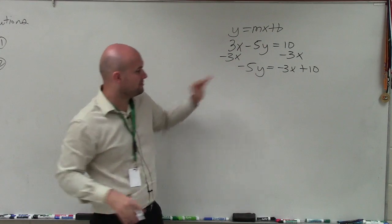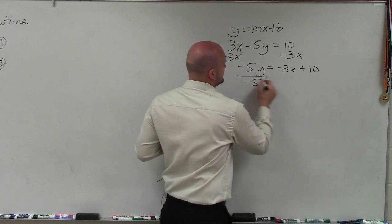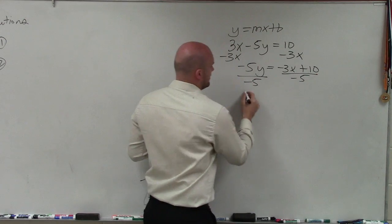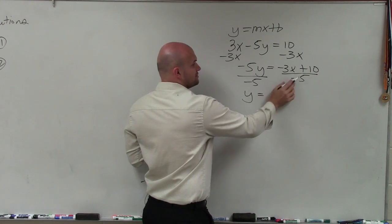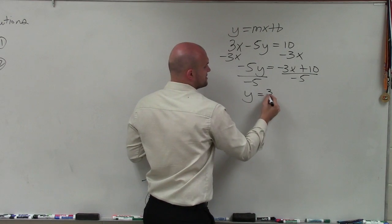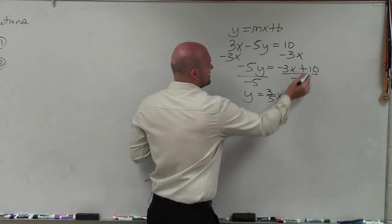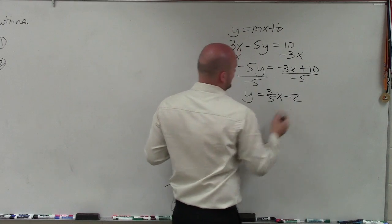Now, we see that my y is being multiplied by negative 5. So I'm going to divide by negative 5. Therefore, I have y equals, now I got to make sure I divide this negative 5 into both of these terms. So negative 3 divided by negative 5 is 3 fifths x. 10 divided by negative 5 is negative 2.